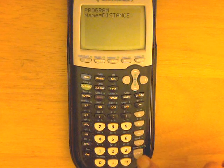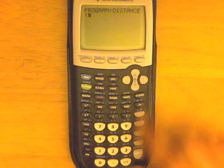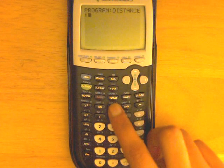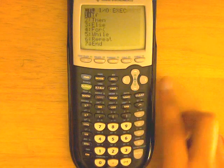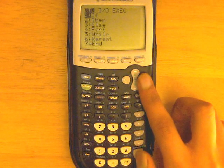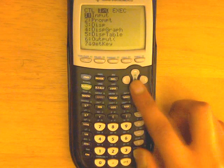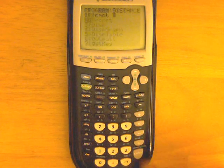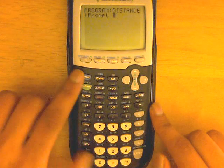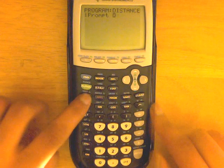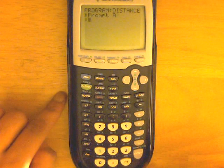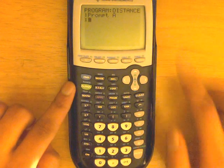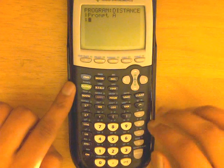Alright, hit enter again. Now you're going to want to hit program, which is right here, slide all the way over to I-O, and then slide down one, and then hit enter on prompt. Then you're going to want to do alpha-A and hit enter again, and then we're going to repeat the process until we get to D.